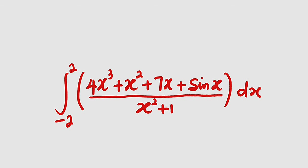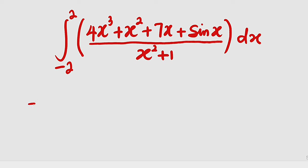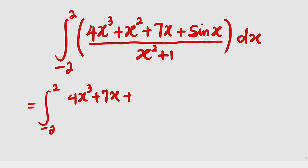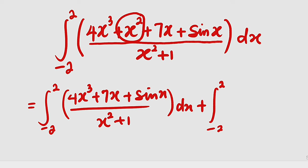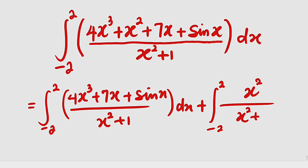So let us test. We can clearly see that 4x³, 7x, and sin(x) are odd. So let us separate the integral. This can be written as the integral from negative 2 to 2 of (4x³ + 7x + sin(x)) / (x² + 1) dx, plus the integral from negative 2 to 2 of x² / (x² + 1) dx, which is the only even function in the numerator.